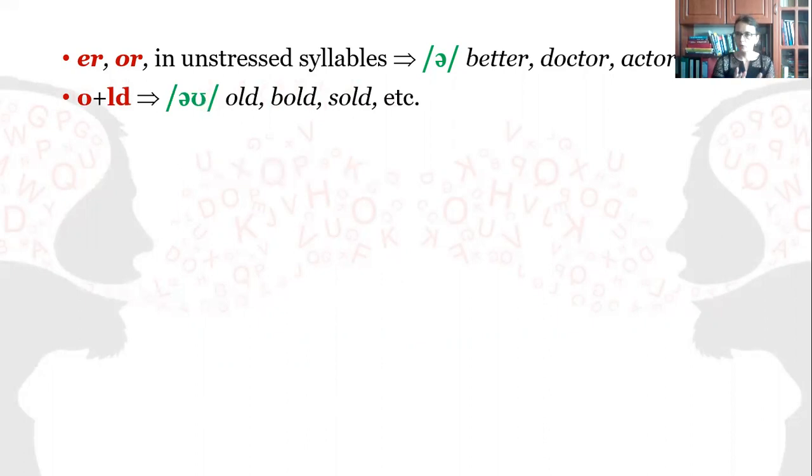O, when followed by the cluster of letters LD, is always pronounced as O. Old, bold, sold, cold.